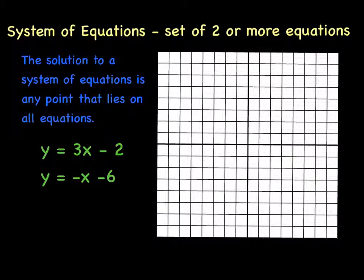Let's go ahead and graph the first equation, y = 3x - 2. I have a y-intercept of negative 2, a slope of 3. Up 3, over 1, up 3, over 1, up 3, over 1, down 3, over 1. So here is my first line.